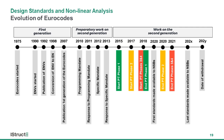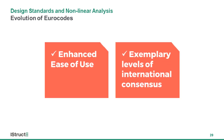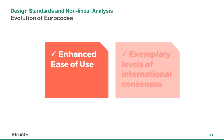Probably around 2024 into 2025, we'll see the last of the new documents made available to national standards bodies. We set ourselves two overarching objectives for the evolution of the Eurocodes: the first is to enhance ease of use, and the second is to achieve exemplary levels of international consensus. In the context of what we're talking about this evening, I wanted to particularly draw out some points about enhanced ease of use.